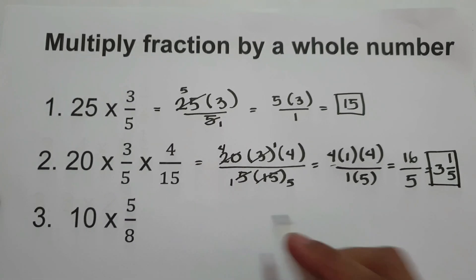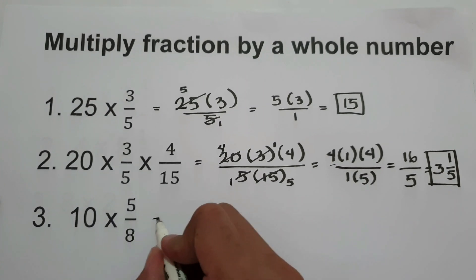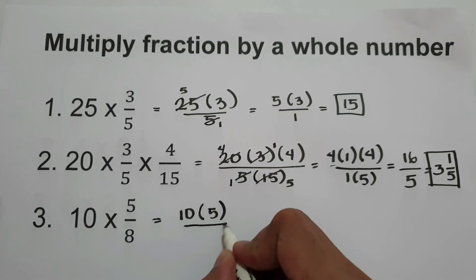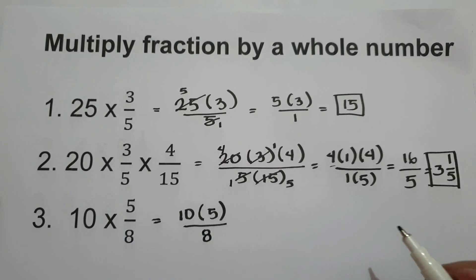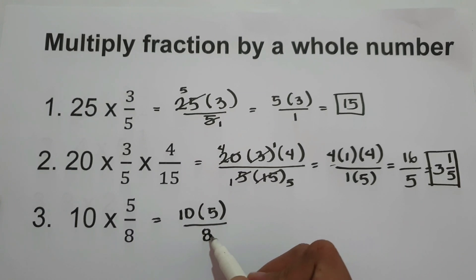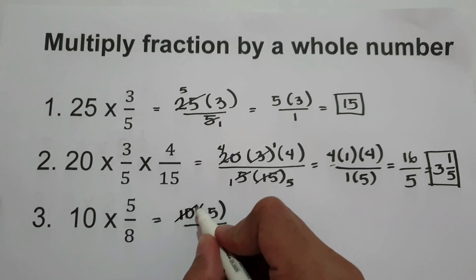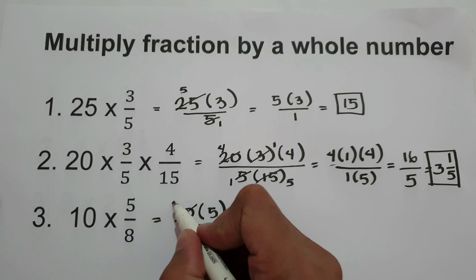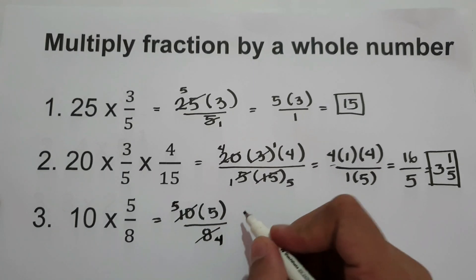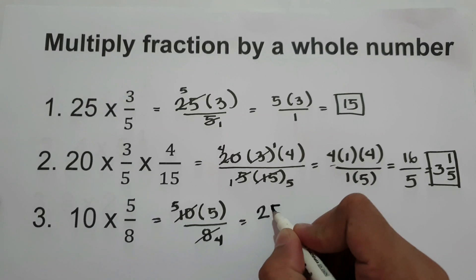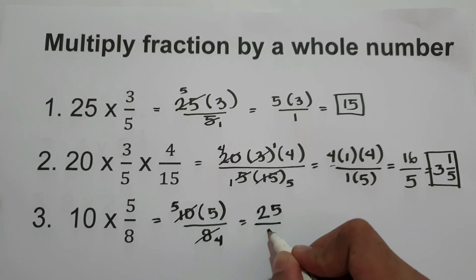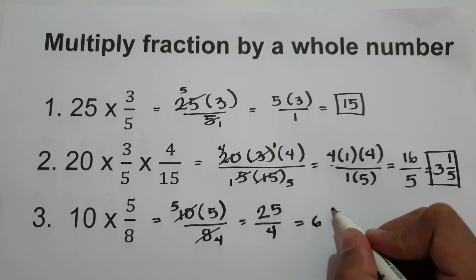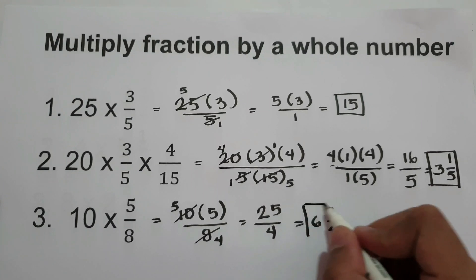What about number 3? We have 10 times 5 over 8. Multiply the whole number by the numerator. You can simplify 10 and 8 — their greatest common factor is 2 — so 10 becomes 5 and 8 becomes 4. Then 5 times 5 is 25 over 4. Since 25 divided by 4 is 6 with remainder 1, the answer is 6 and 1 fourth.